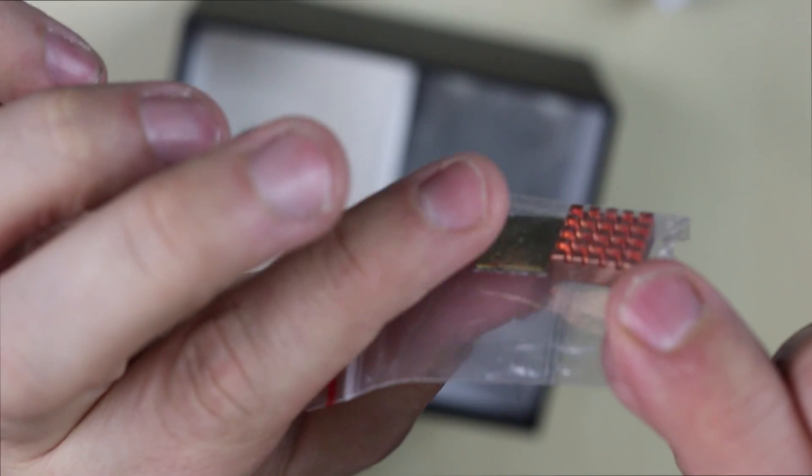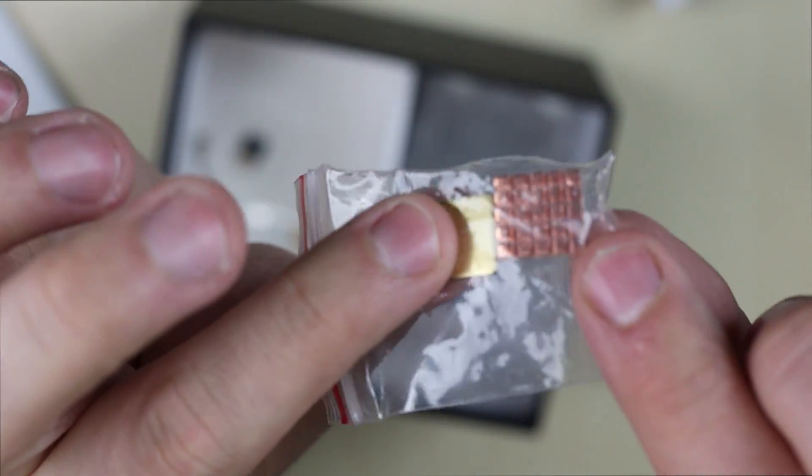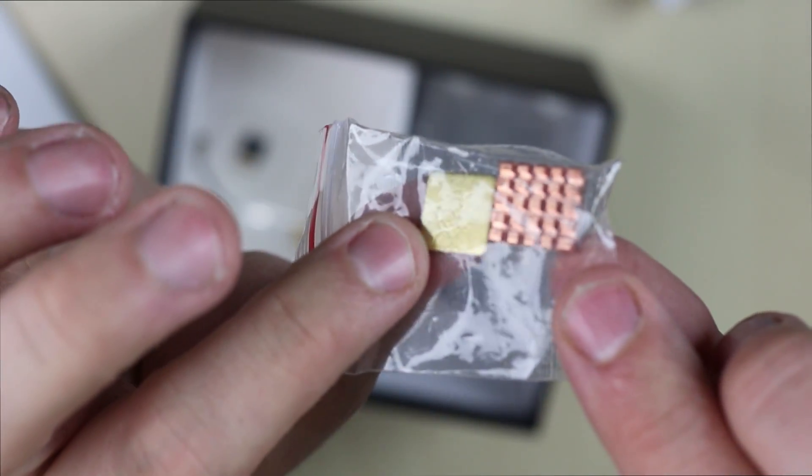It also comes with this heatsink and thermal adhesive tape. This will cool the Raspberry Pi CPU. Cool that it comes with that.